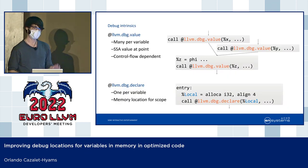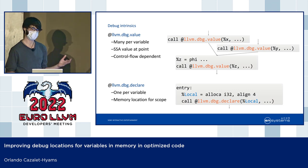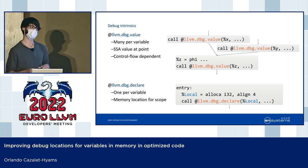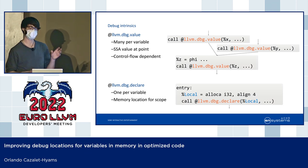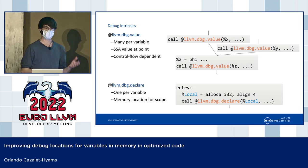I want to give you a quick refresher on debug intrinsics in LLVM, which is how we track variable locations. There are two kinds. We've got debug value — when we use these, there'll be many per variable. Each one marks out a position in the IR where the variable changes value and what that value is as an SSA value.